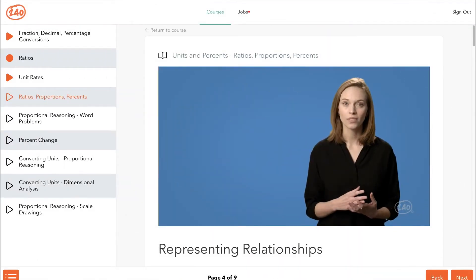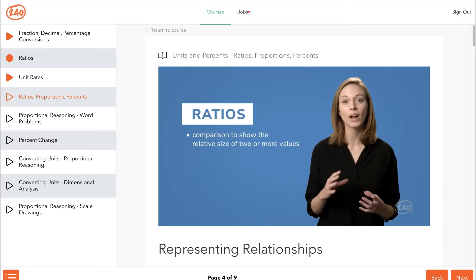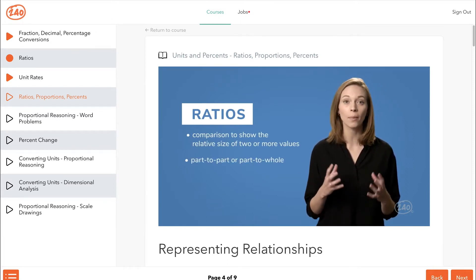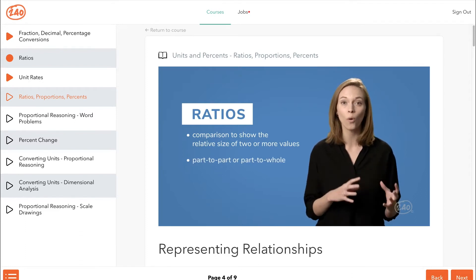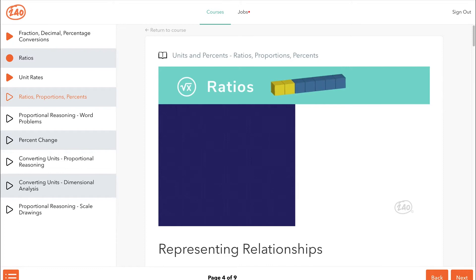Let's look closer at ratios. A ratio is a comparison that shows the relative size of two or more values. A ratio can be a part-to-part comparison or a part-to-whole comparison. Suppose there are two yellow blocks and five blue blocks. We can write the ratio in several part-to-part ways. All of these representations can be read as: for every two yellow blocks, there are five blue blocks. Similarly, a ratio can be a part-to-whole comparison. These can be read as: the ratio of yellow blocks to all blocks is two to seven, or for every seven blocks, two of them are yellow.